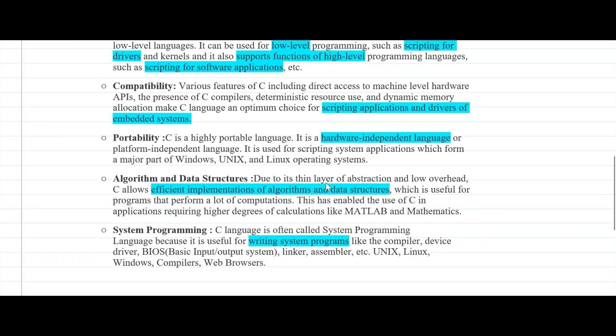C is often the optimum choice for scripting applications as well as drivers for embedded systems. C is a highly portable language, so it's hardware independent and hence it's very useful when we talk about system applications like Windows, Linux and Unix operating systems.